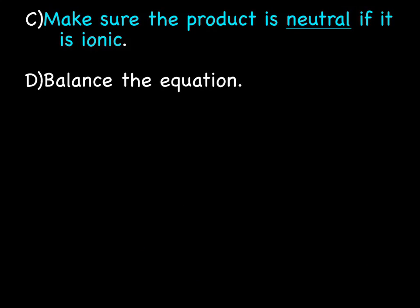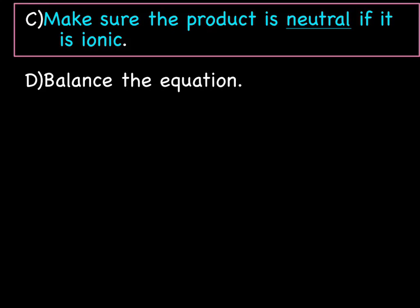Make sure the product is neutral if it's ionic. Common mistake there. You've got to check, remember, when you make a product, you have to ask yourself the question, ionic or covalent? If the answer is ionic, you need to check the charges and neutralize it. And then the last step is to balance the equation. Whenever you write a reaction, you balance it, always.